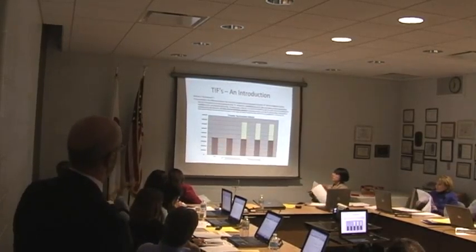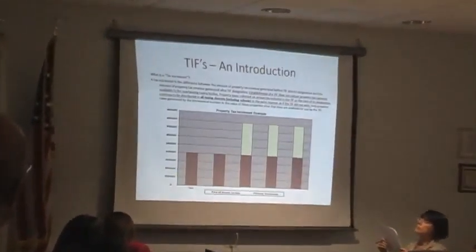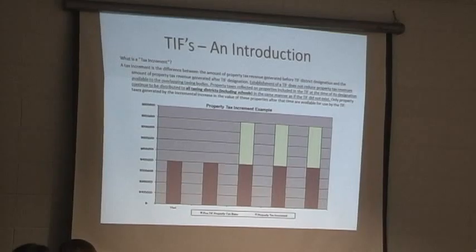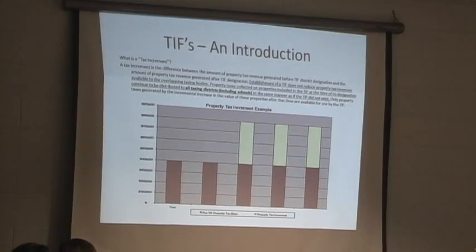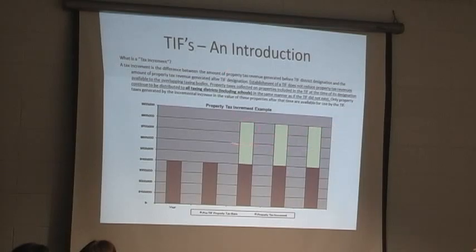To graphically illustrate the point, the tax increment, as I mentioned earlier, is that amount above a base year that is established. You establish a base year, the property taxes continue to be collected at that amount, and then if you have incremental growth over time — such as is shown in this chart with these few years down the road — those are the investments that are made back into the district.